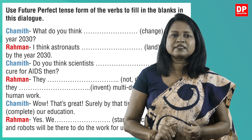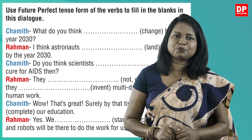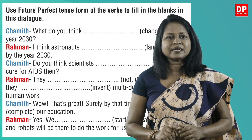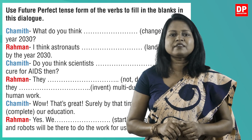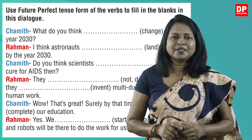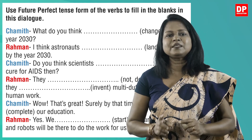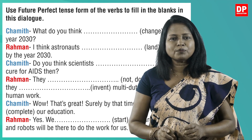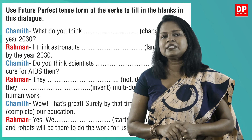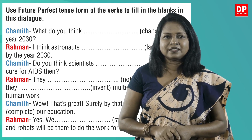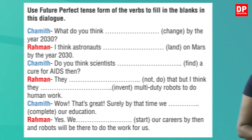Let's do one more activity. This is Activity 7 on page 137 of your textbook. Here you have a dialogue between Chamit and Raman. You have to read it and fill in the blanks with the correct form of the verb given within brackets. Pause the video and do the activity now.